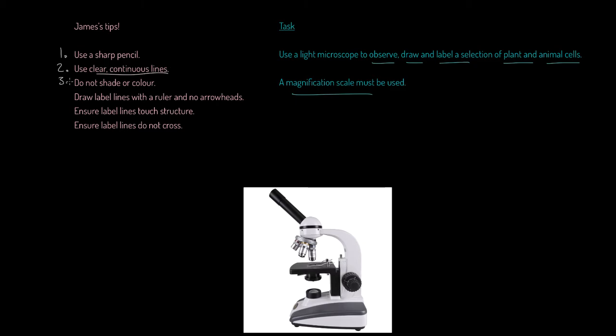Thirdly, do not shade or color. We're going to be drawing, ultimately, what would be an outline image in this environment. Fourthly, draw label lines with a ruler. Nice and straight. I'm actually going to break that rule in this tutorial because I'm going to freehand it a little bit. And no arrowheads, please. In biology, we don't use arrowheads. We use straight lines.